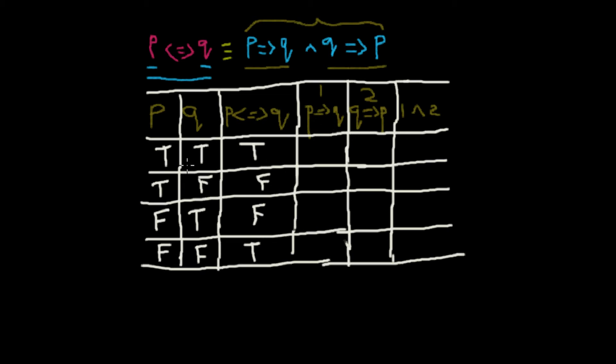P implies Q is false only when P is true and Q is false. You can find out about this in one of my previous videos. In all other cases it is true.